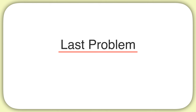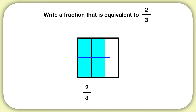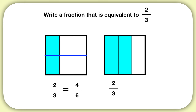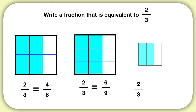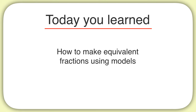Here's your last problem for this video: write a fraction that's equivalent to two-thirds. I'll show you a few examples. If you drew a model of two-thirds and split it into two equal sections, you'd get the fraction four-sixths. You could also draw a model of two-thirds and split it into three equal sections, giving you the equivalent fraction six-ninths. Or maybe you split it into four equal sections and found the equivalent fraction eight-twelfths. You could have had other options if you broke your model into smaller sections. Today you learned how to create equivalent fractions using models.